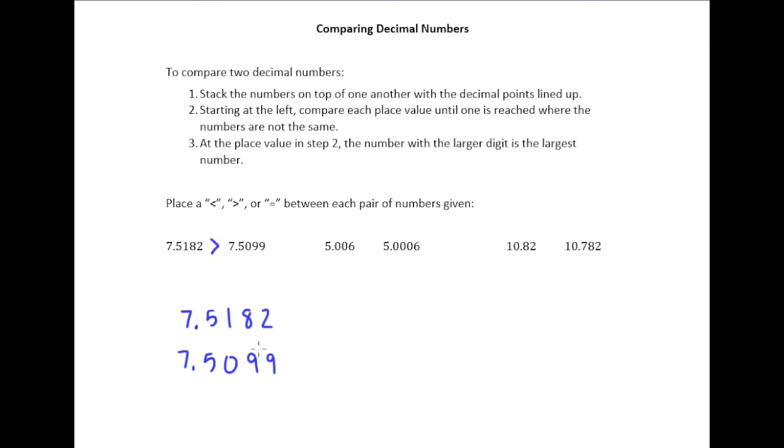Notice it doesn't matter that for the next two digits, the other number has the larger digit. That doesn't matter at all. We only look at the very first place value in which they differ when you're going from left to right.